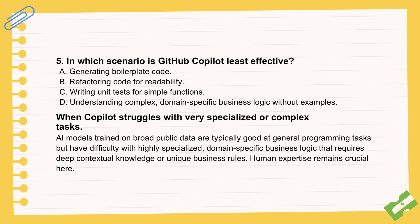On the other side of the coin, where does Copilot tend to fall short? It's actually pretty good at things like boilerplate, helping with refactoring, even writing basic unit tests — that's kind of its sweet spot. Where it really has trouble is understanding complex, very specialized, or unique business logic, especially if you don't give it clear examples. It's great for common coding patterns and tasks, but it just doesn't have that deep, nuanced knowledge for highly intricate business rules unique to your situation. Unless you feed it enough context and examples, it simply can't generate accurate code for those really niche cases. Knowing where the AI shines — and where human expertise is still absolutely needed — is a crucial distinction.